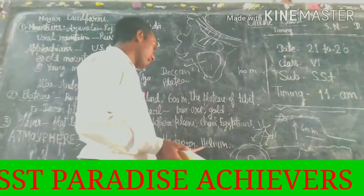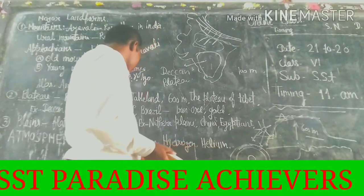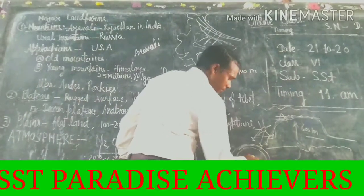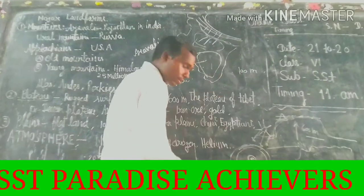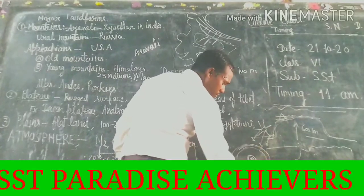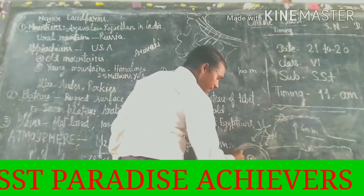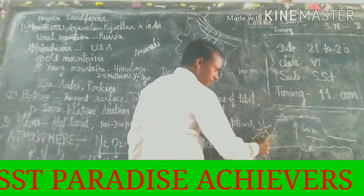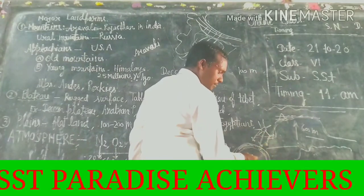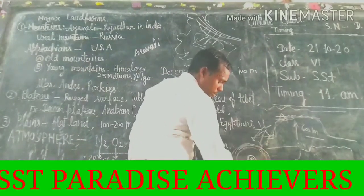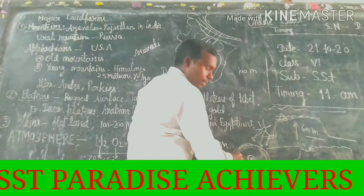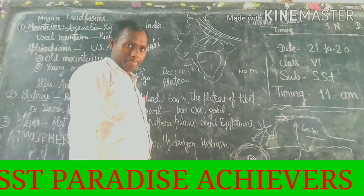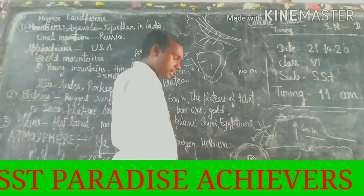Argon, helium, and hydrogen are other gases. You should also know about the ozone layer. The ozone layer covers our Earth. When sun rays come, the ultraviolet rays are absorbed by the ozone layer. If there is no ozone layer, there will be a problem of skin disease and human beings will be affected.